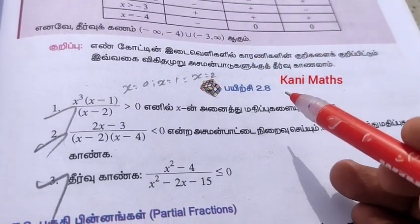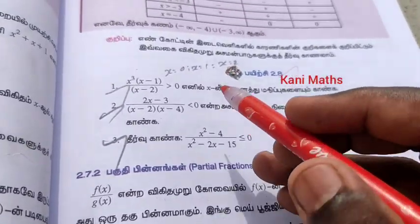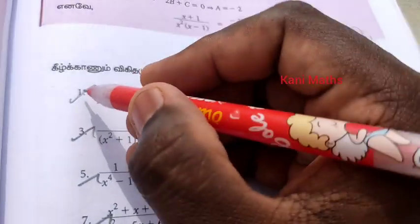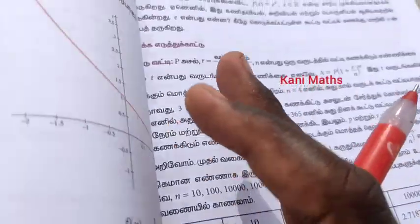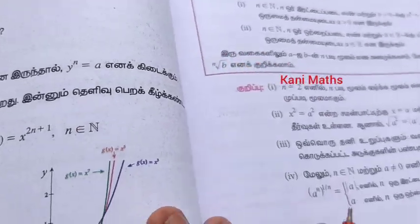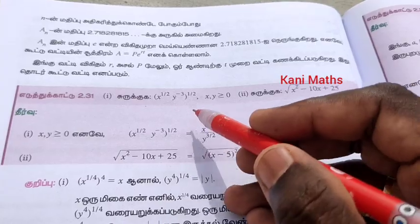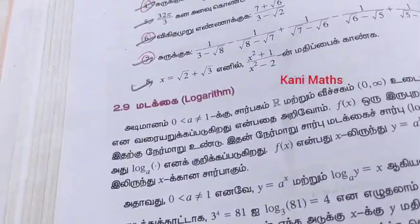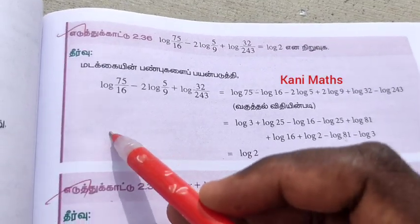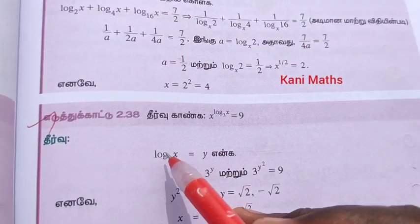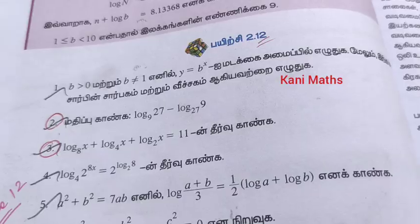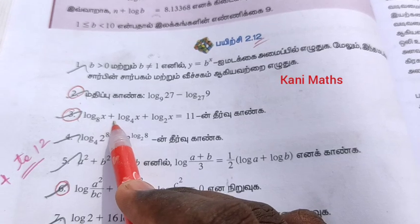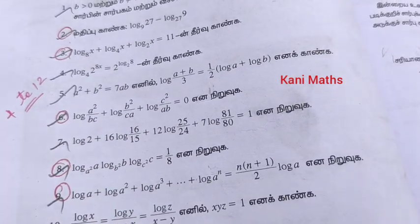The most important question is Exercise 2.8: Q2, Q3, Q4. Also Q2, Q3, Q6, Q8, Q9, Q11, Q12.